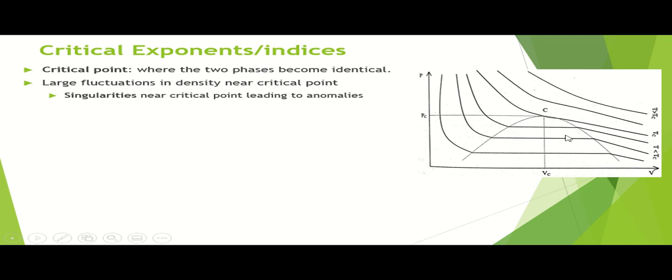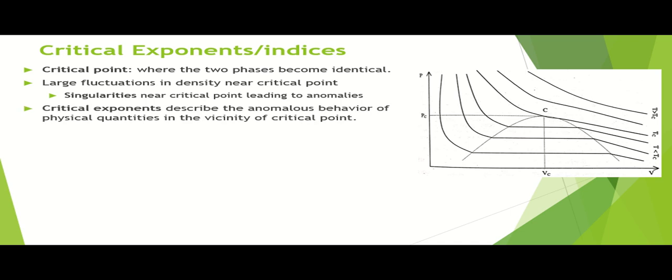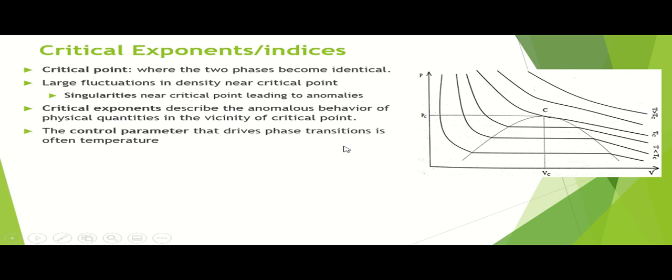The anomalies are not limited to only density — we will also have problems defining the pressure there, or the specific heat. We will see those quantities where the anomalies or discontinuities appear because of these critical points. So the critical exponents are basically used to describe the anomalous behavior of physical quantities in the vicinity of the critical point.